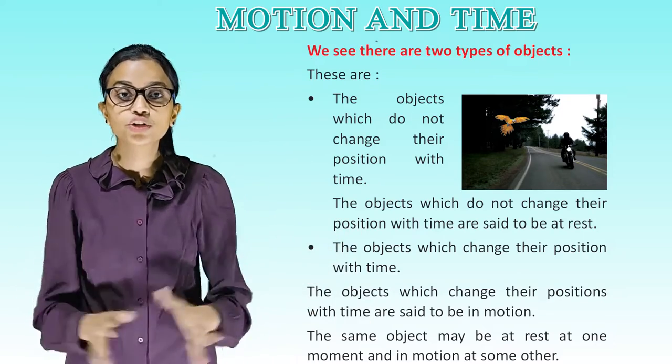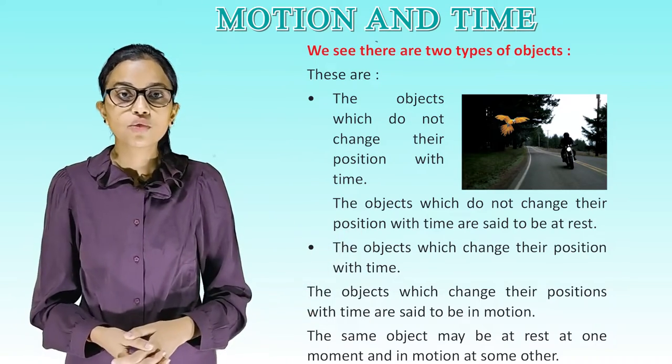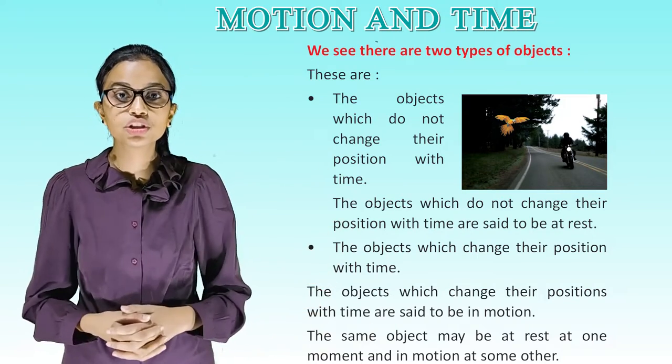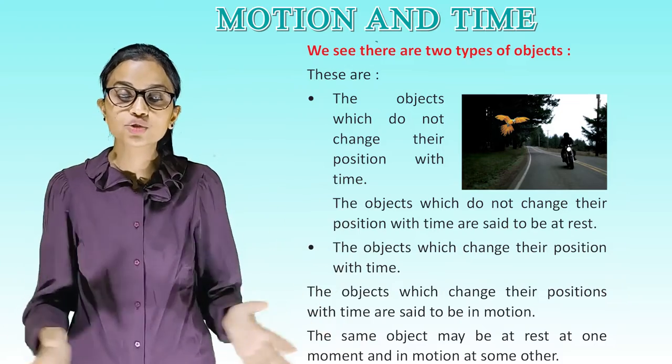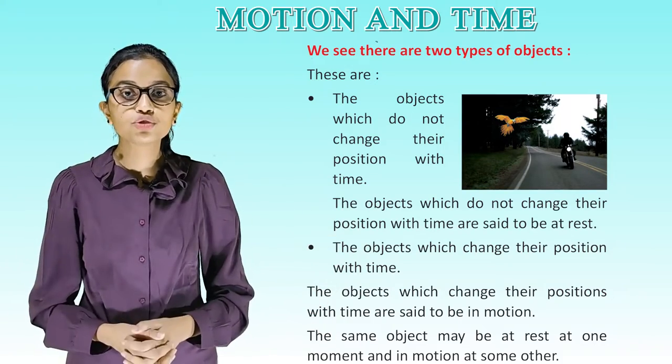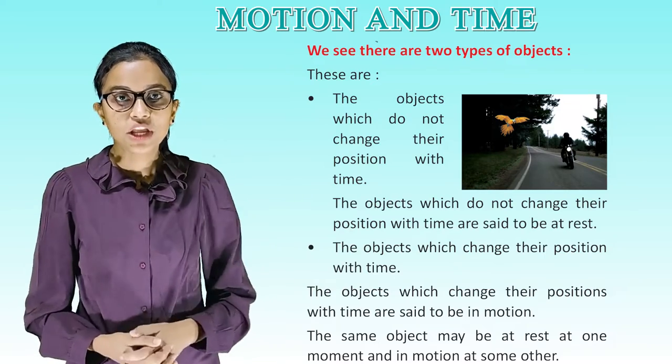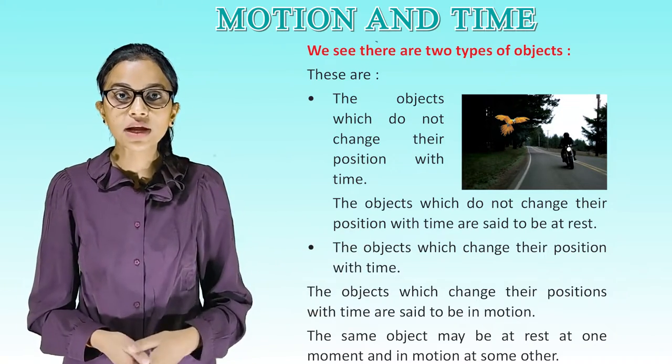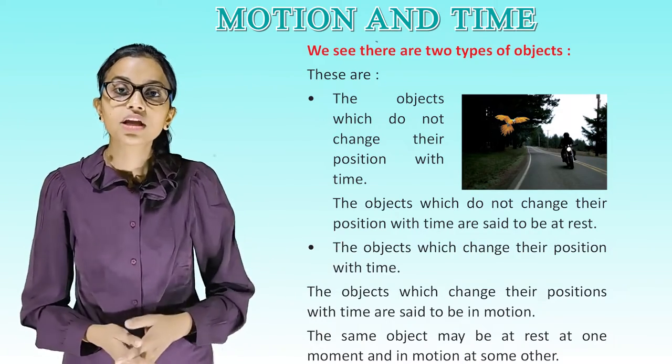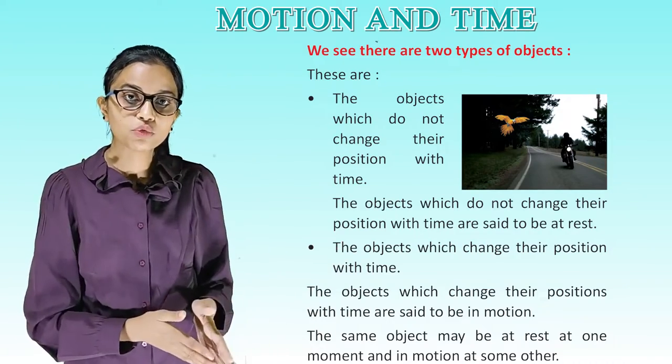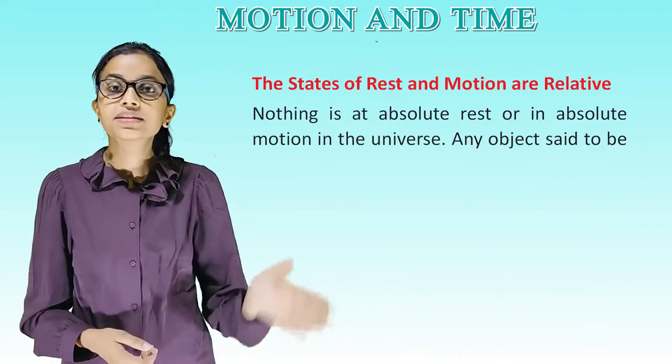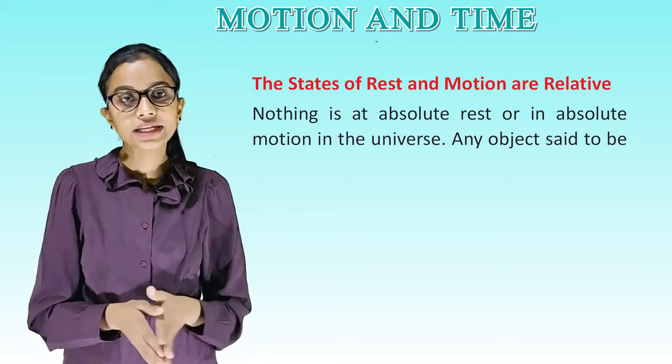So we see there are two types of objects. These are the objects which do not change their position with time. The objects which do not change their position with time are said to be at rest. The objects which change their position with time are said to be in motion. The same object may be at rest at one moment and in motion at some other.